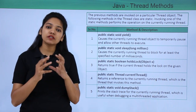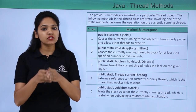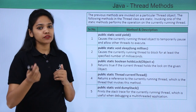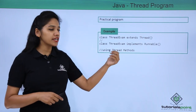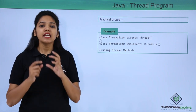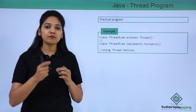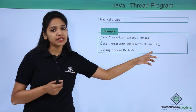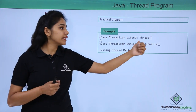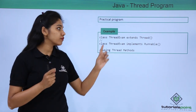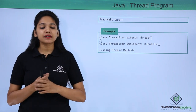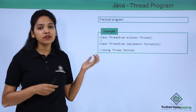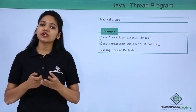What you understand is that to achieve concurrency — performing multiple tasks together — you need to decide which thread runs first, which runs next, and what resources are allocated to which threads. We will now look at an example of threads, implementing the Runnable interface or extending the Thread class, to understand the different ways of creating a thread and running them.